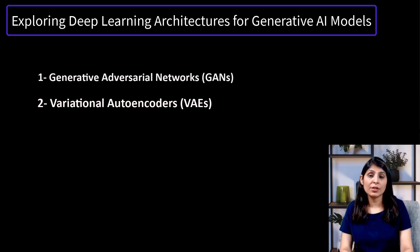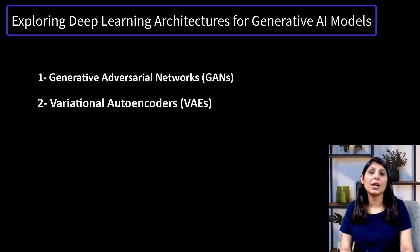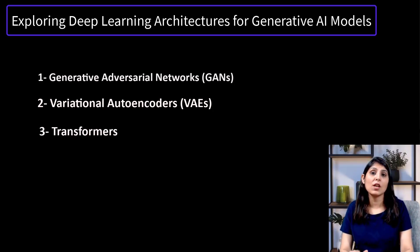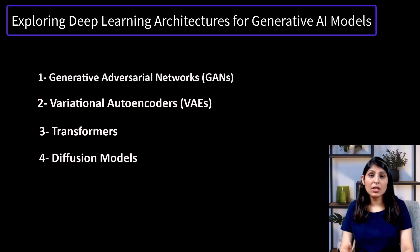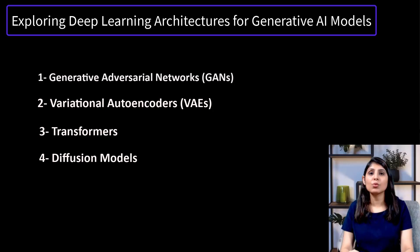The second architecture is Variational Autoencoders. Using VAEs you can also create generative AI models — these models learn to represent input data in a compact latent space and generate new data points by sampling from that space. Then we have Transformers, originally developed for natural language processing tasks. Transformers have shown impressive capabilities in generating text and images; LLMs like GPT-3.5, GPT-4, and LLaMA models are based on the transformer architecture. Finally, we have Diffusion Models, which refine the generation process by modeling how data changes over time, leading to the creation of high-quality images and text.